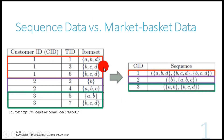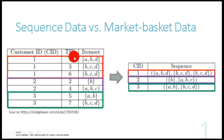Earlier we were looking for item sets or transactions and finding relationships between items — that was market basket analysis. Now in sequential analysis, we still need the transaction ID, but in this case the transaction ID also gives us information about the sequence of the transaction, meaning which transaction was made first. It's not a random value. If you capture the customer ID, you may be interested in looking at what future products or purchases the customer may make.